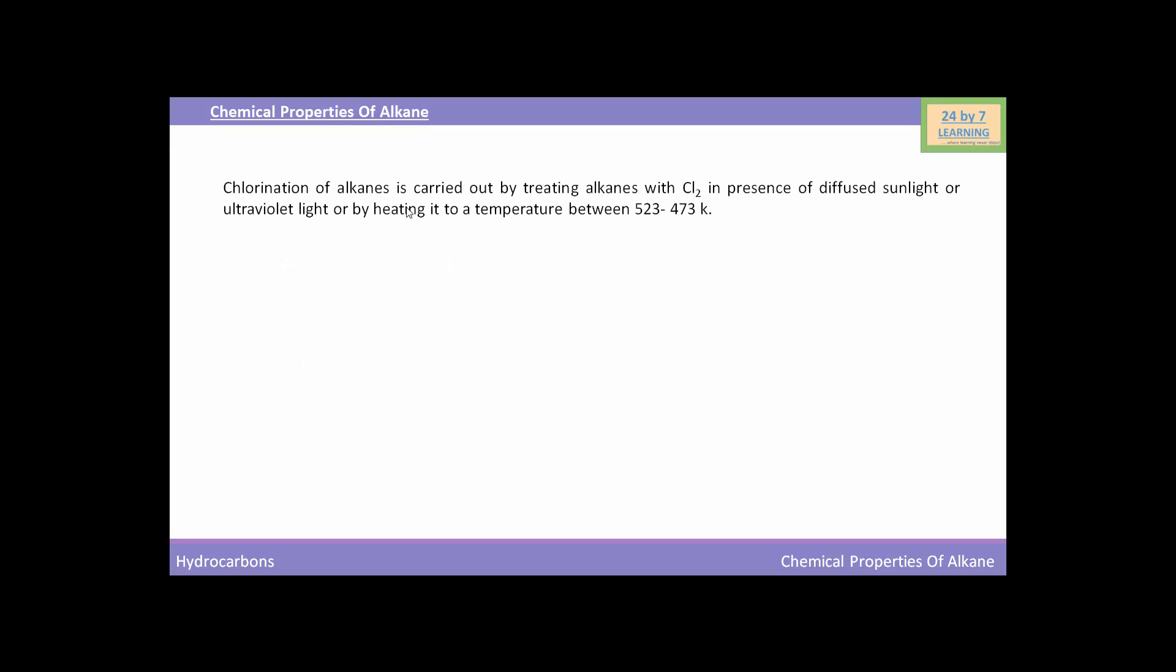Chlorination of alkanes is carried out by treating alkanes with Cl2 in presence of diffuse sunlight or ultraviolet light or by heating it to a temperature between 523 to 473 Kelvin. These are the reactions showing halogenations.